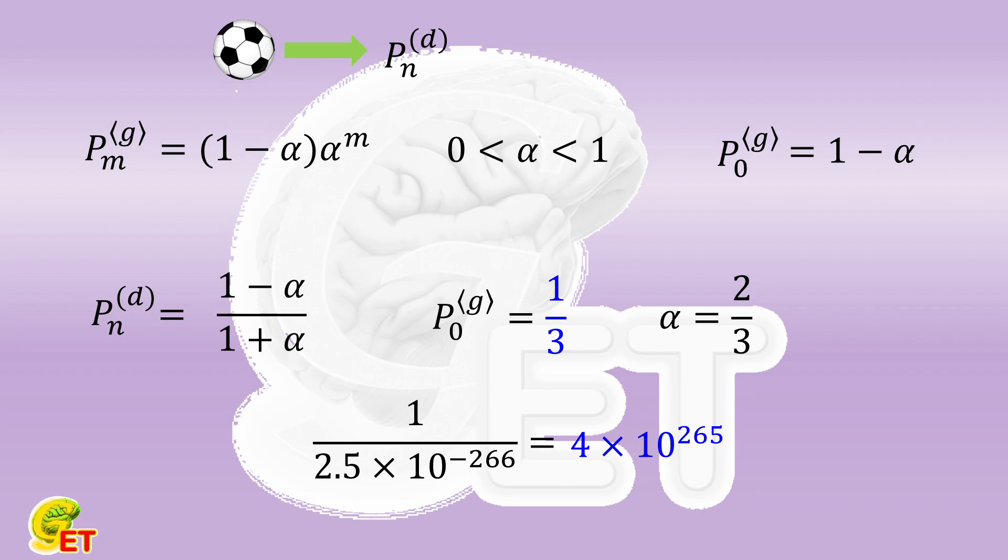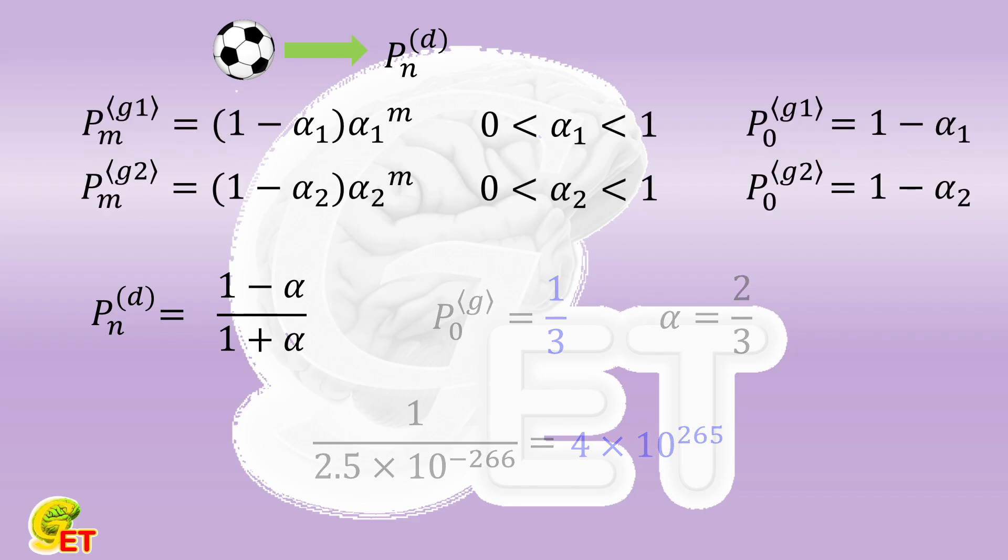We assume that in a game, the abilities of two teams to score goals are no longer described by the same parameter α, but different ones, α₁ and α₂. By using the same method as before, we can calculate the probability of a game ending in a draw in this case, as (1 - α₁)(1 - α₂)/(1 - α₁α₂).